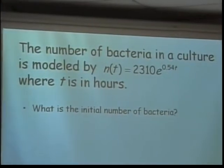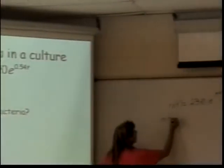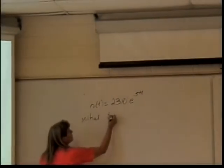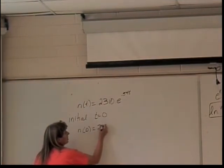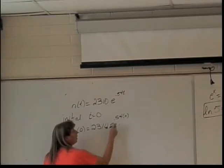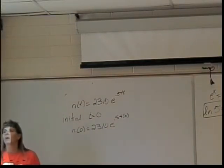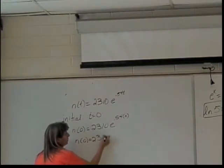What is the initial number of bacteria, and how do I determine that? Set t equal to 0. So the initial number, that is when t is equal to 0. So n of 0 is equal to 2310 times e to the 0.54 times 0. Any number raised to the 0 is 1. So n of 0, or our initial population, is 2310.